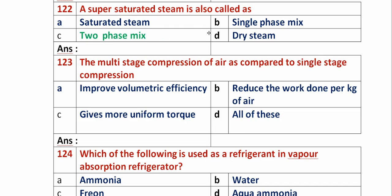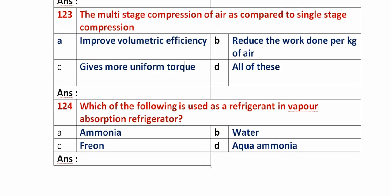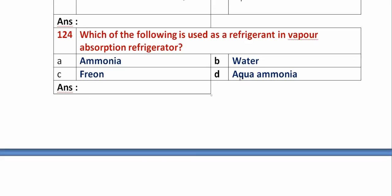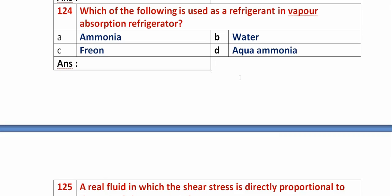Question 123: Multi-stage compression of air as compared to single stage compression — Option A: improves volumetric efficiency. Option B: reduces work done per kg of air. Option C: gives more uniform torque. Option D: all of the above. Multi-stage compression improves volumetric efficiency, reduces work done per kg of air, and gives more uniform torque. So option D, all of the above, is the right answer.